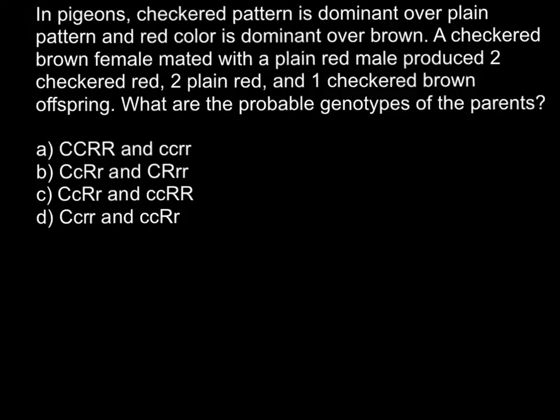So we have the phenotype of one parent, a checkered brown female. This phenotype can be made of different variants of genotype. We're told that checkered pattern is dominant over plain pattern.